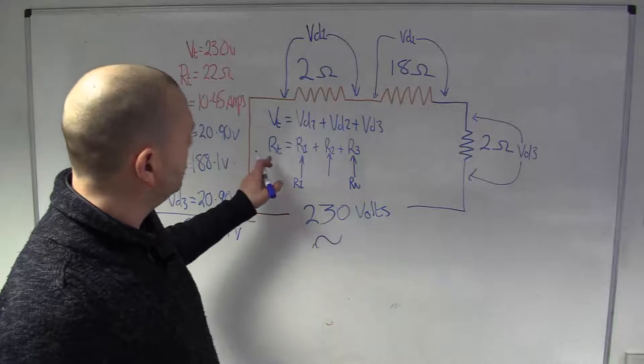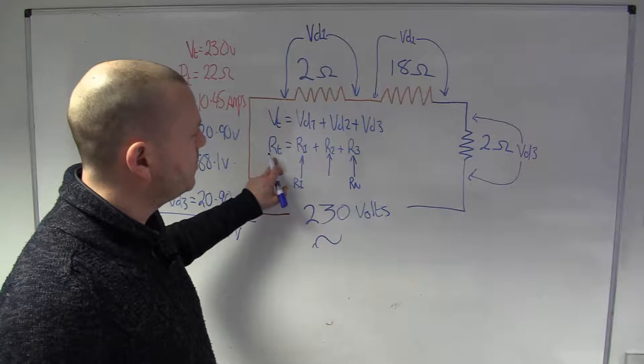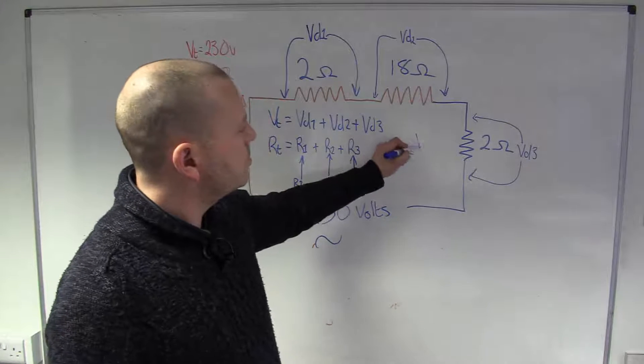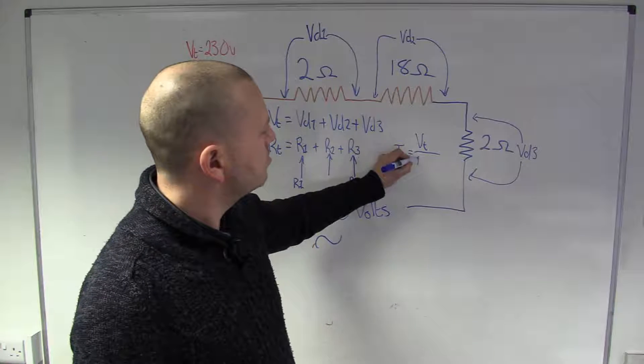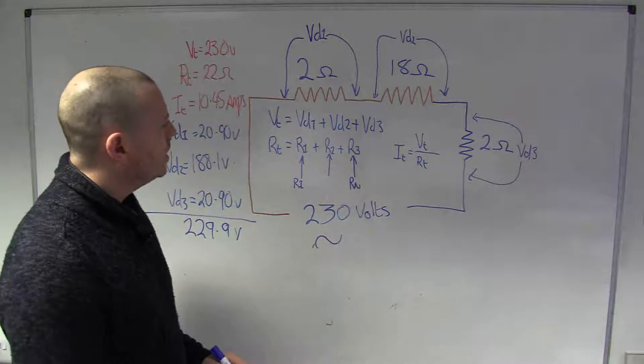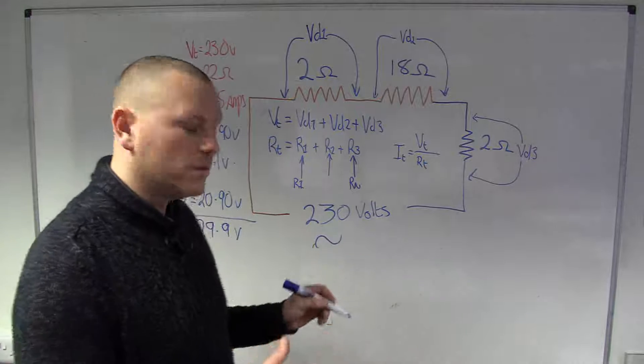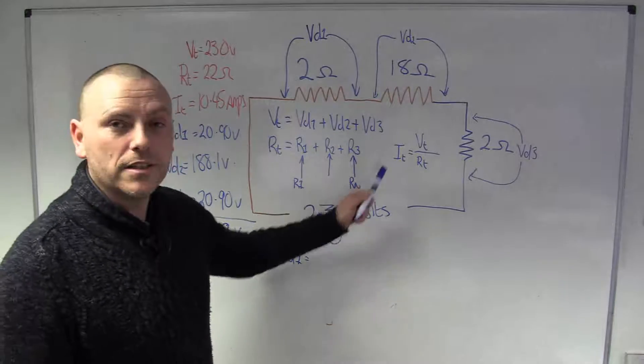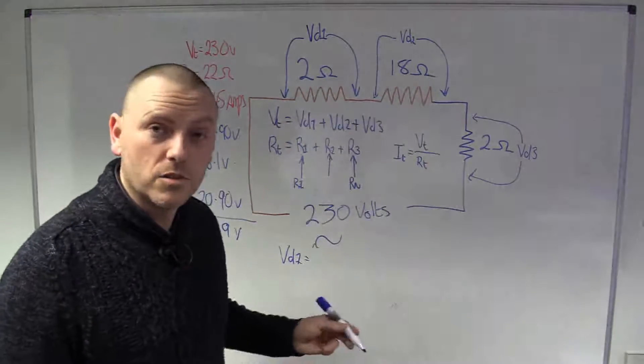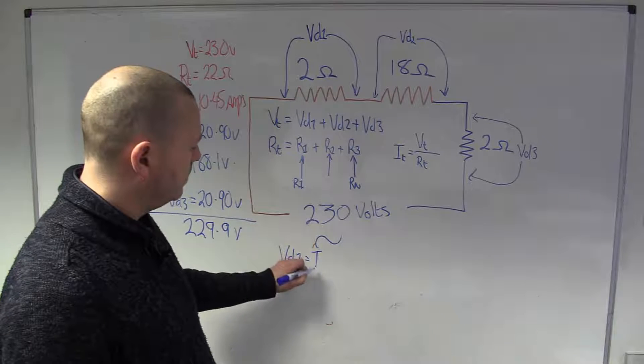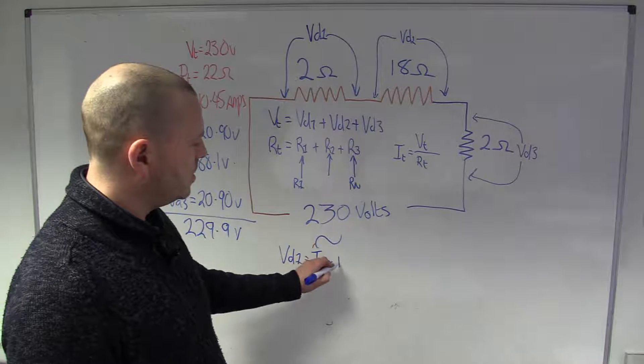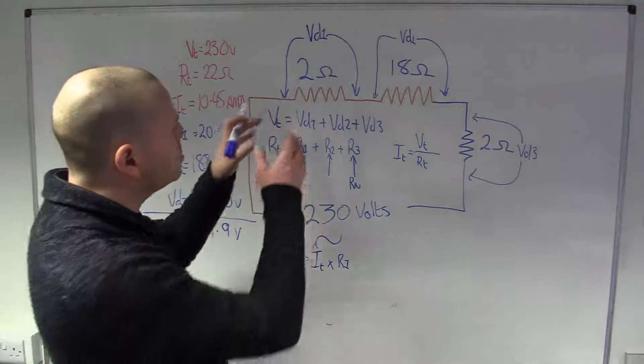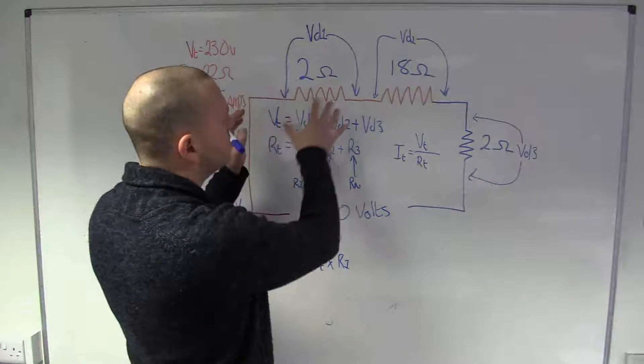Okay so that's how we'd calculate our total resistance and then to get our total current what we did, we did our total voltage divided by our total resistance. And then we went on to do the volt drops and we said volt drop 1 was equal to the current in the circuit which is the total current so IT times resistor 1 because that's the resistor we were interested in so we kind of zoomed in, it's still Ohm's law but we've now zoomed into this area.